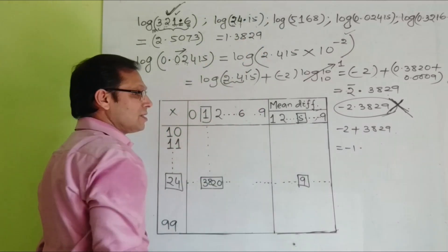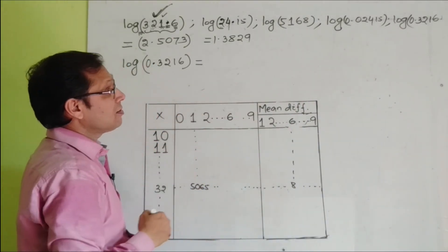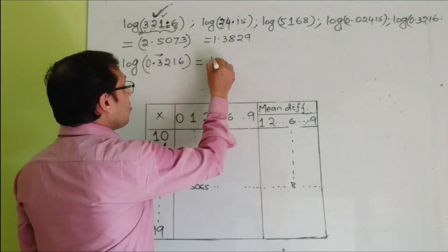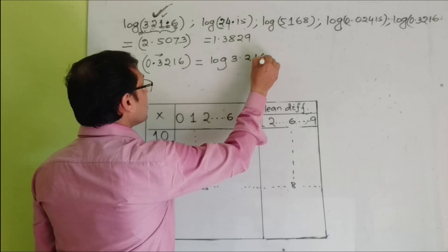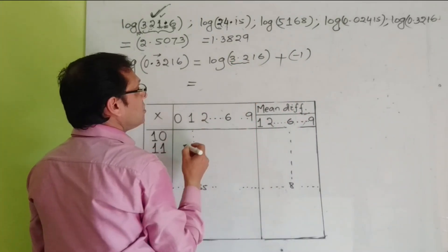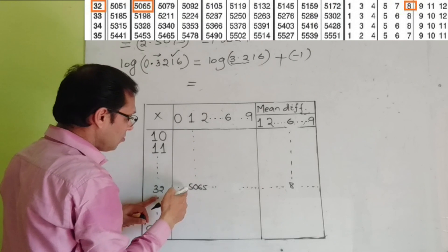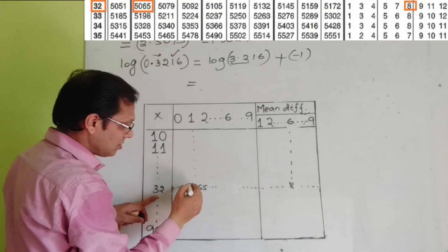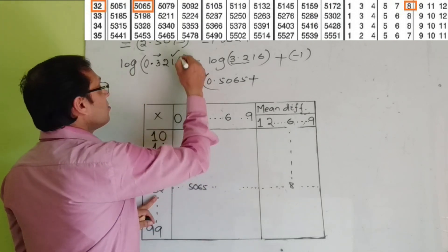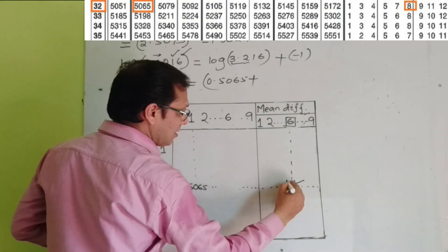Fifth example: find log 0.3216. Express in standard form: 0.3216 = 3.216 × 10^(−1), moving the decimal one place right. So the characteristic is −1 (written as 1̄). For log 3.216: find 32 in the first column; third digit 1 → below 1 right of 32 is 5065, giving 0.5065; fourth digit 6 → mean difference below 6 right of 32 is 8, giving 0.0008. Mantissa = 0.5073. Therefore log 0.3216 = 1̄.5073, meaning −1 + 0.5073.